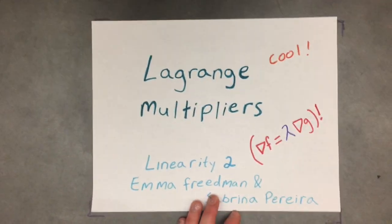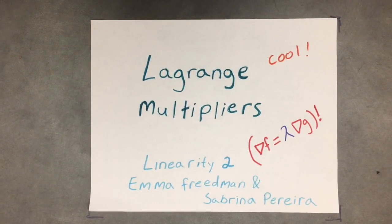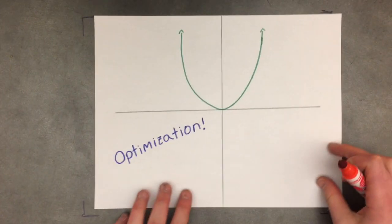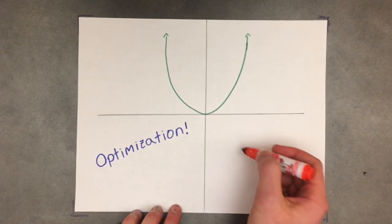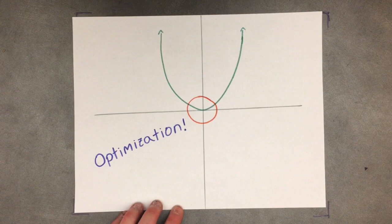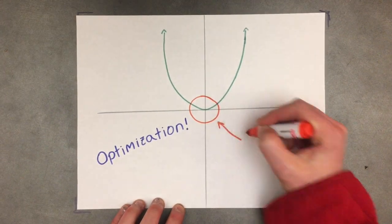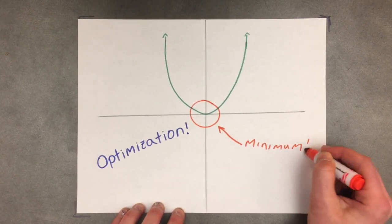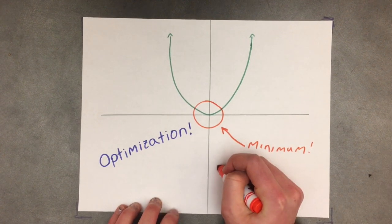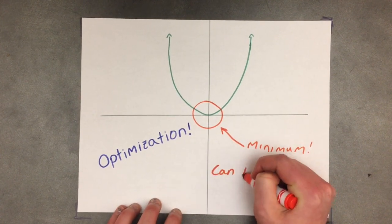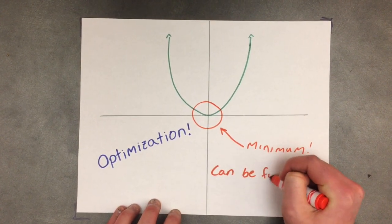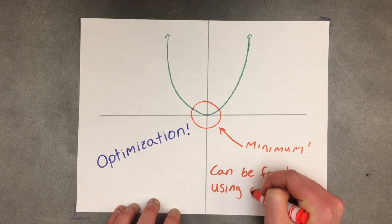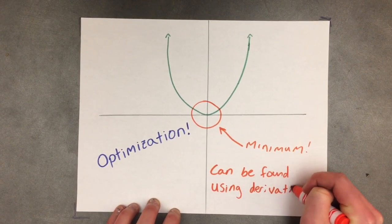Today we're going to be talking about Lagrange multipliers. Optimization is the process of finding either maximums or minimums. In calculus we did this with one variable and we found critical points using derivatives. The critical points are where the slope equals zero.